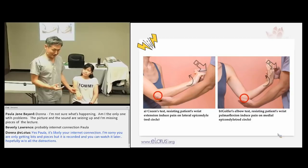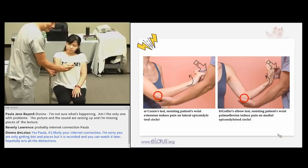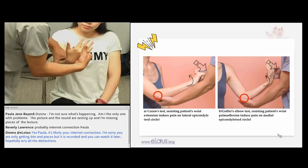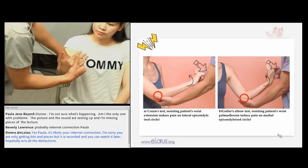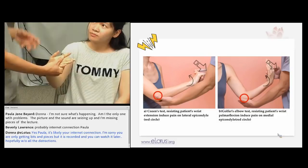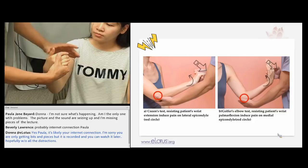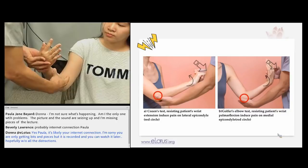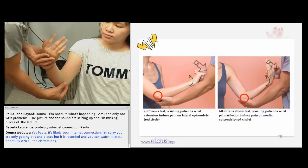To sensitize the golfer's elbow maneuver, have the patient grab the fingers and resist — this makes the muscle group contract and the tendon attached at the medial epicondyle is stretched more. This is the sensitizing maneuver. The Job test uses the same mechanism but tests the supraspinatus tendon — contracting the supraspinatus and stretching it produces pain if there is a tear.